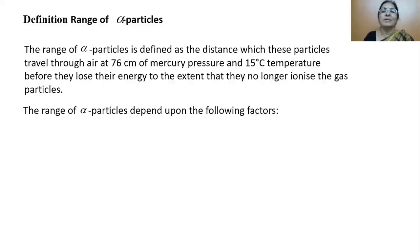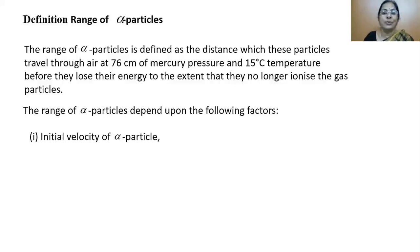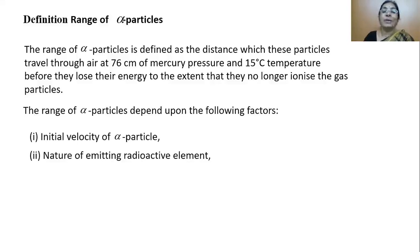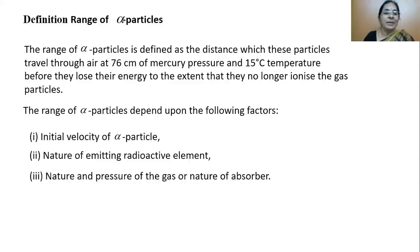The range of alpha particles depends upon the following factors: first, the initial velocity with which alpha particles escape from the radioactive nuclei; second, the nature of the radioactive element, as there are many radioactive elements and from which one the alpha particle is coming out matters; and third, the nature and pressure of the gas or medium in which they travel.